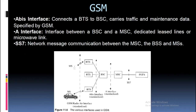The Abis interface connects a BTS to a BSC and carries traffic and maintenance data as specified by GSM. The A interface is the interface between a BSC and MSC, using dedicated leased lines or microwave links and SS7 network messaging for communication between the MSC, the BSS, and MSS.